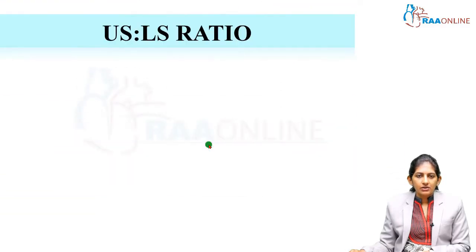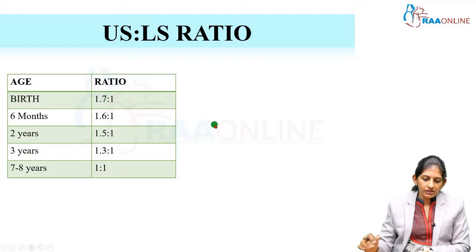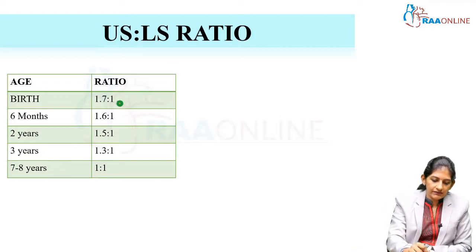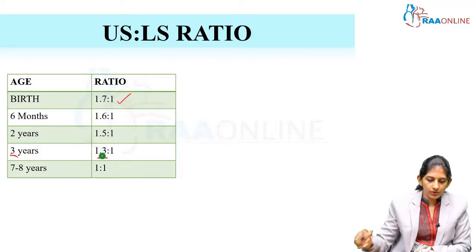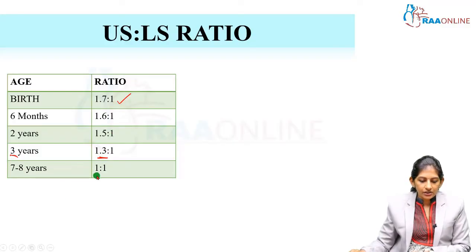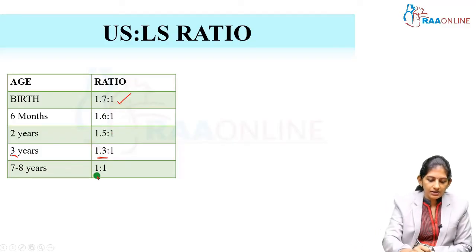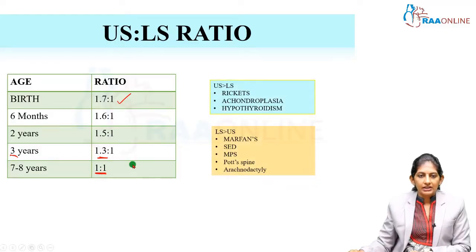The upper segment to lower segment ratio at birth will be 1.7:1, and at 3 years it will be 1.3:1. In between, you can note 6 months and 2 years values as well. At 7 to 8 years, the upper segment and lower segment will become equal.